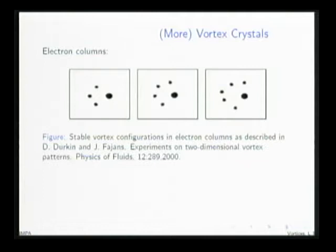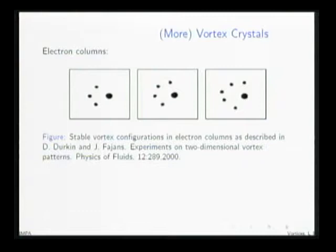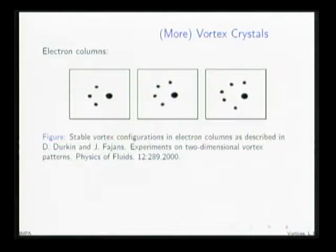Another place where these are seen: these are experimental figures of electron columns in a magnetic field. If you write down the equations of motion, you find that these electron columns move according to the same equations that describe point vortices in an inviscid fluid. Again, these are different experimentally observed configurations in which the vortices rotate with a fixed angular frequency while maintaining the same relative position. We have one dominant vortex much larger than the others, and then a number of smaller vortices.